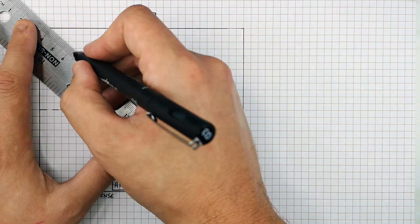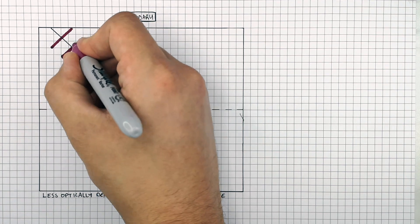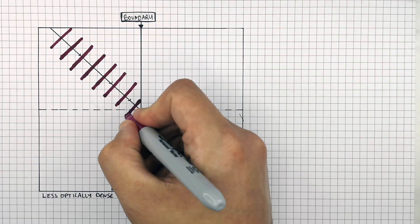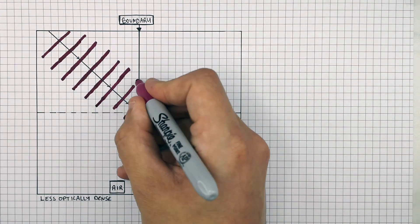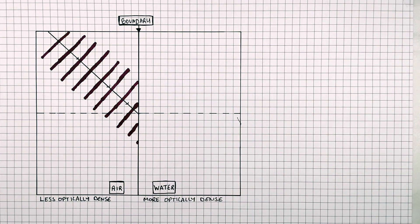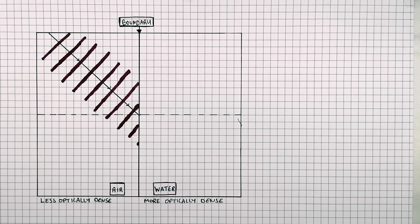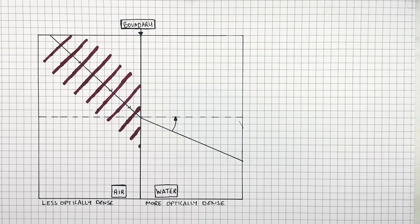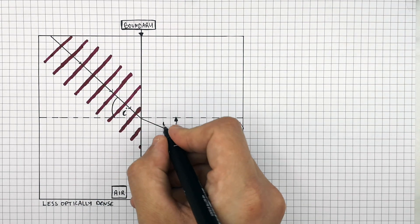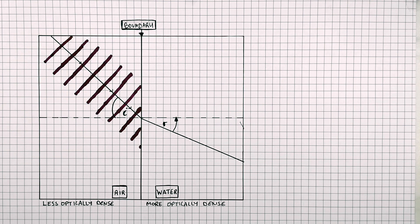This is the incident ray approaching the boundary. These are the wavefronts drawn perpendicular to the incident ray, at 90 degrees to it, right up until they reach the boundary. Because the wave is travelling from air into water, it is going to refract and bend towards the normal, so the angle of refraction will be smaller than the angle of incidence. It changes speed because the wavelength decreases but the frequency stays the same — therefore it slows down.